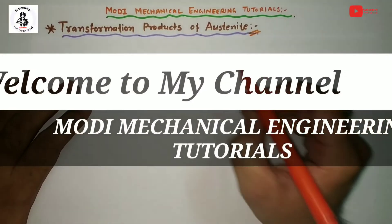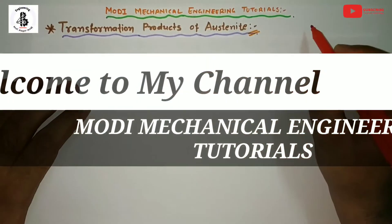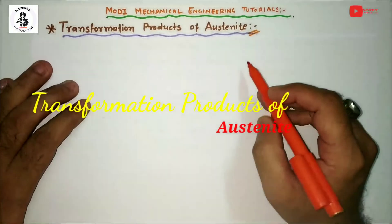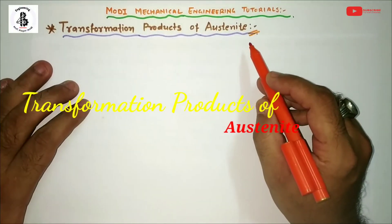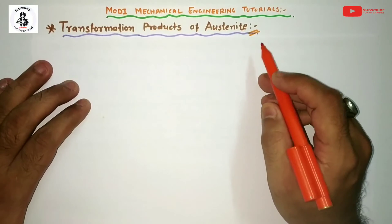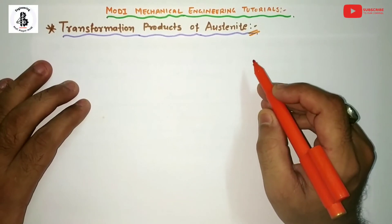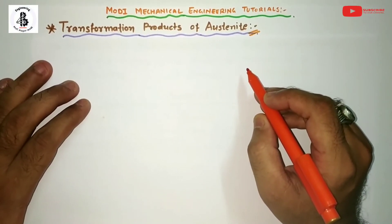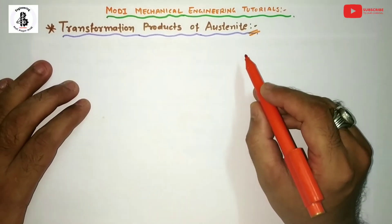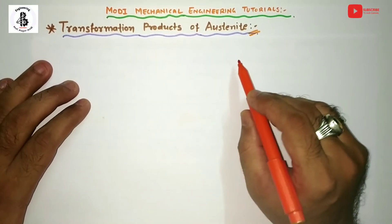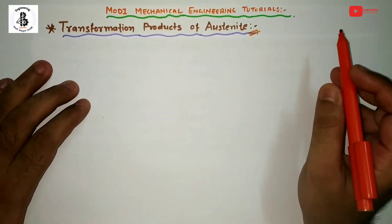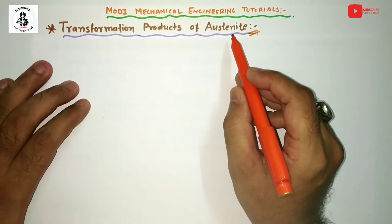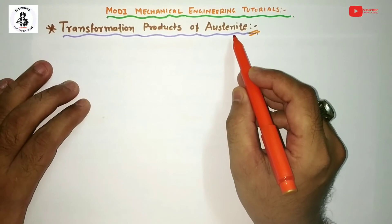Welcome to my YouTube channel Modi Mechanical Engineering Tutorials. In this video I would like to explain about transformation products of austenite. In my previous video it was all about non-equilibrium kind of cooling onto the steels, which is quite similar to this theory, but here the main concentration is on how austenite transforms into the different products.